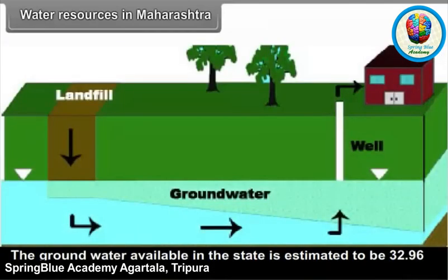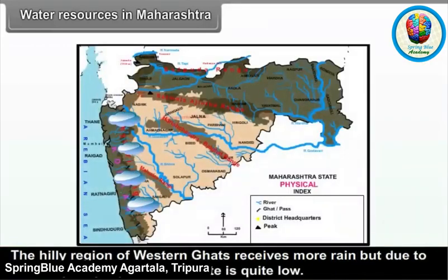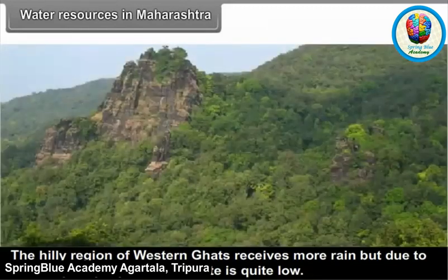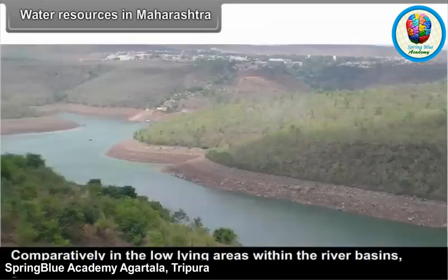The groundwater available in the state is estimated to be 32.96 BCM. However, groundwater is not available in the same quantity in different parts. The hilly region of the Western Ghats receives more rain, but due to steep slope, the percolation rate is quite low. In central Maharashtra, as rainfall is less, the groundwater potential is also low. Comparatively, in the low-lying areas within the river basins, groundwater is more.